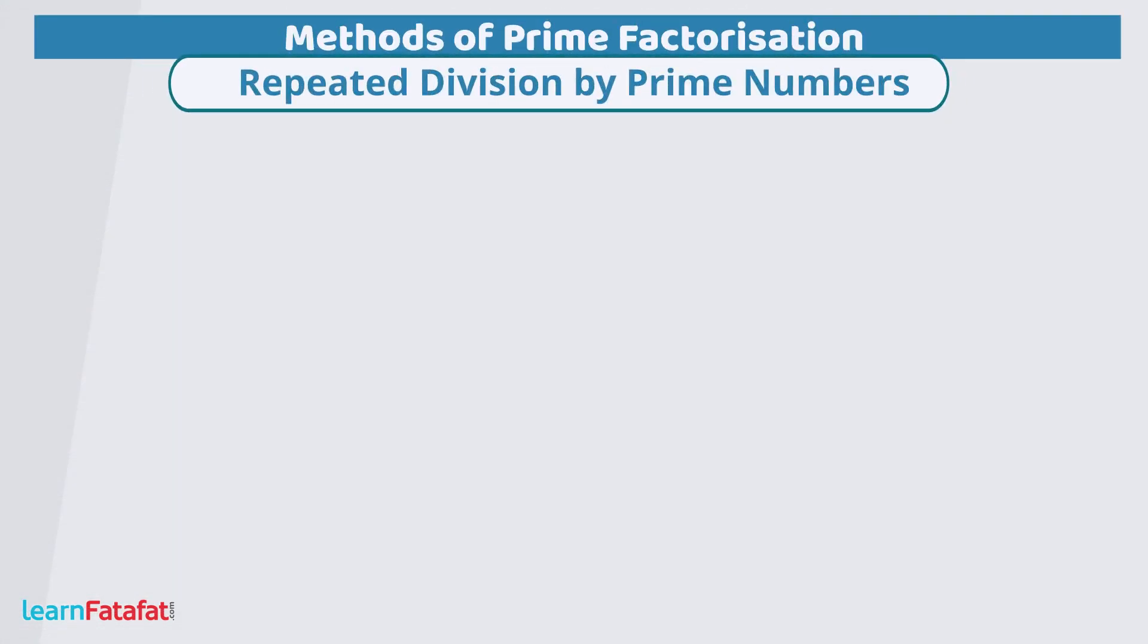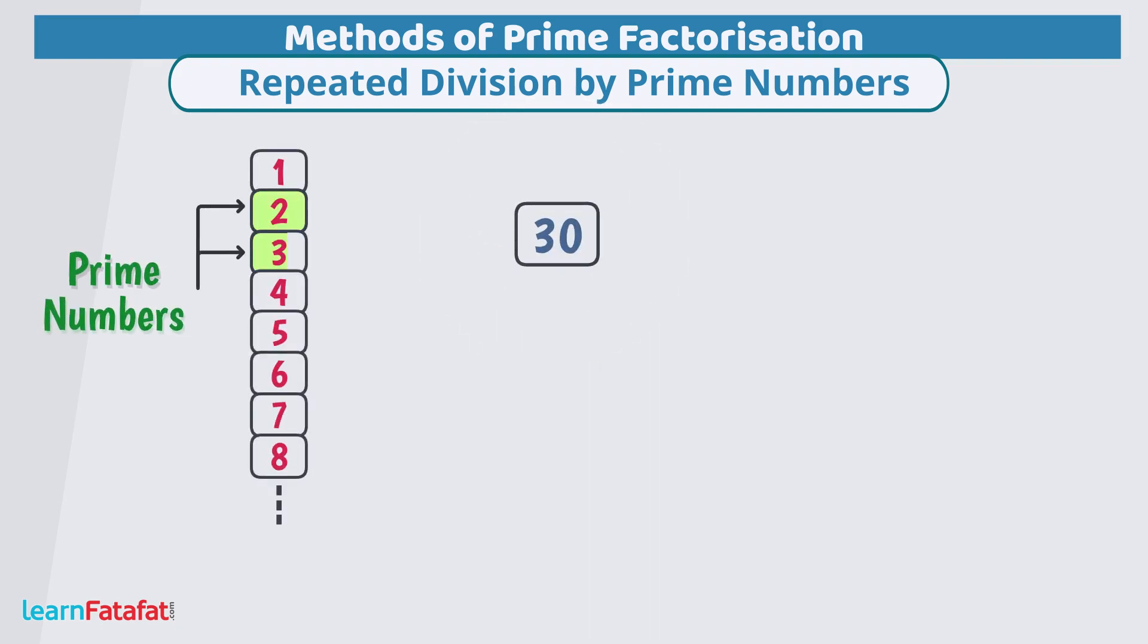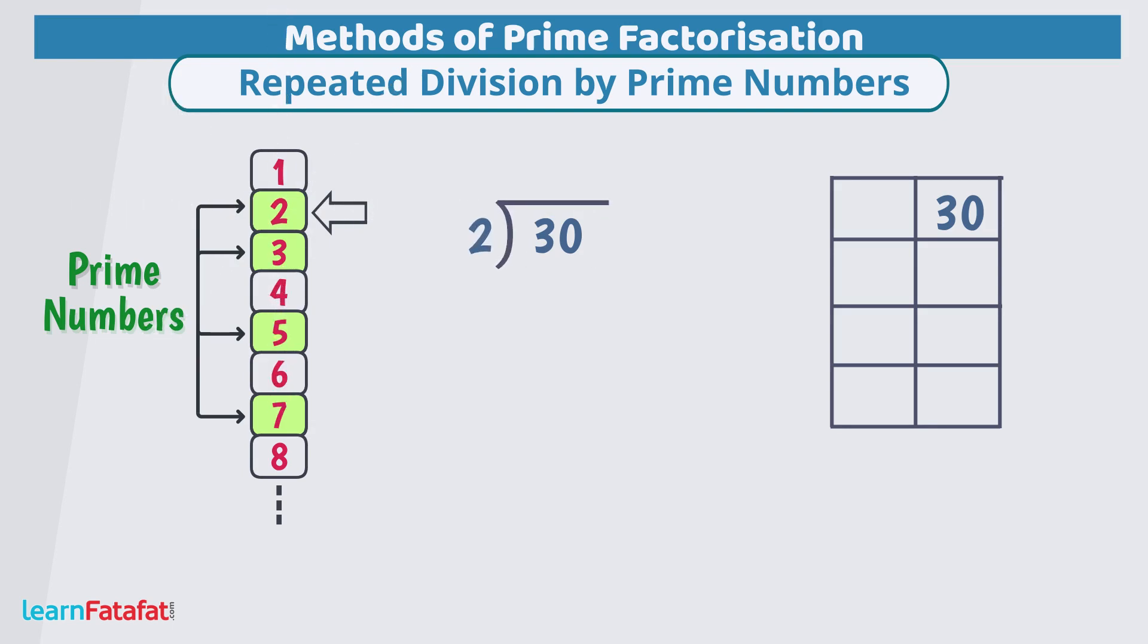Repeated division by prime numbers. In this method, we divide the number by prime numbers 2, 3, 5, 7 and so on. Make 2 columns and some rows. Write the given number in the top right cell. Take smallest prime number that is 2 and check if given number is divisible by it completely.